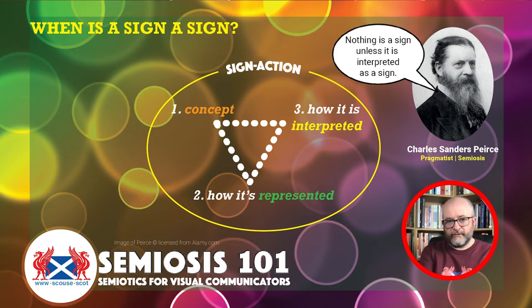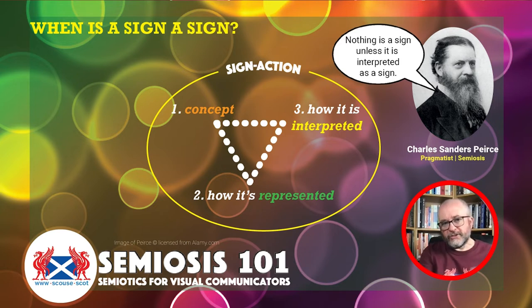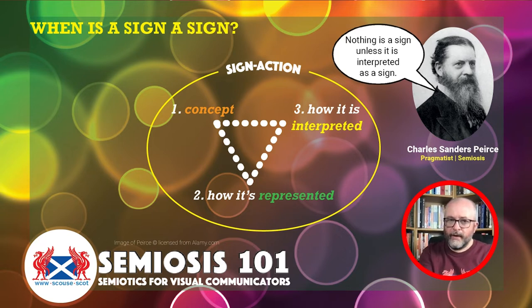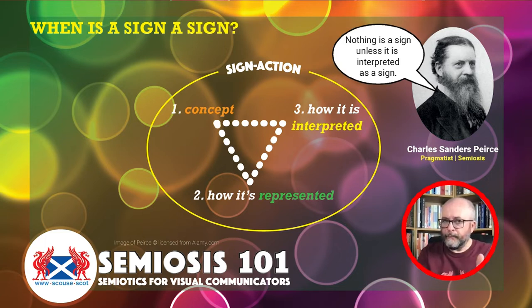Let's remind ourselves of semiosis — Peirce's word for sign action. The determination flow starts with the concept to be communicated. Peirce calls it the 'object'; we use the designer-centric term 'concept.' The concept comes from the brief, the client, the needs of the project. As designers and illustrators, we look for visual language to communicate that concept, and how that is represented is the second part of the sign action.